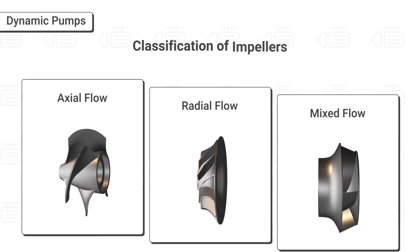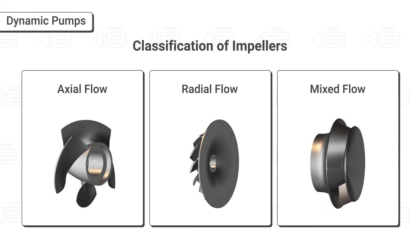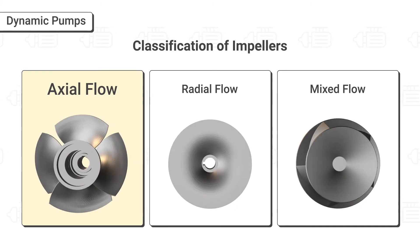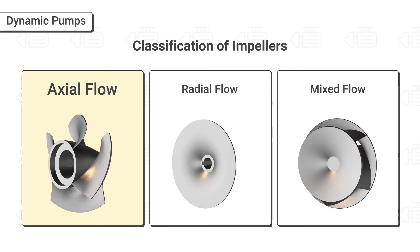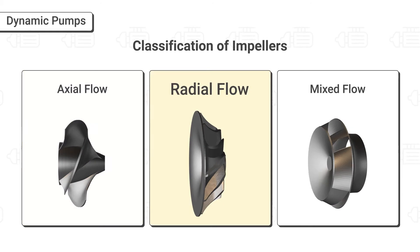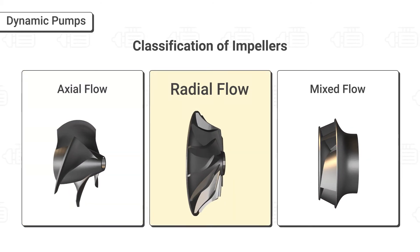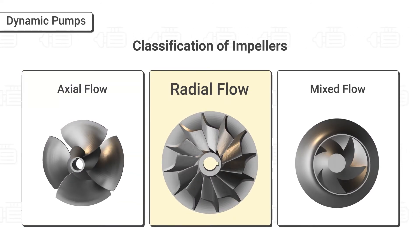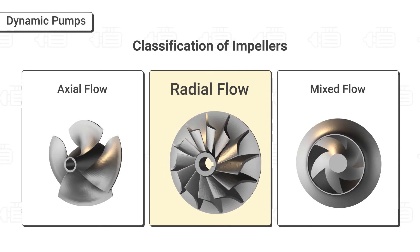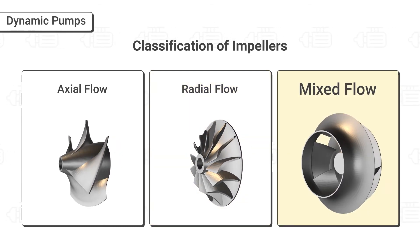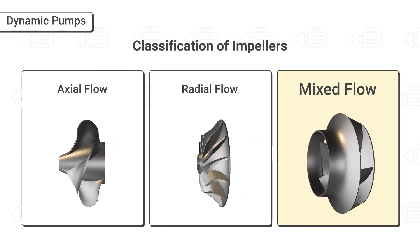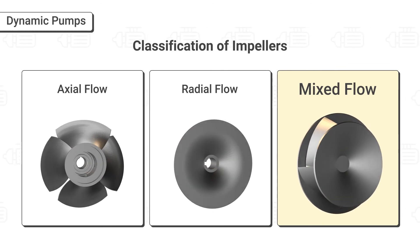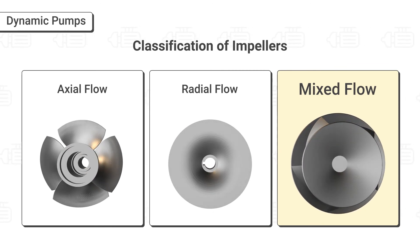We can classify impellers into three designs. Axial flow: the axial flow impeller discharges fluid along the shaft axis. Radial flow: the radial flow impeller discharges the fluid radially at 90 degrees to the shaft axis. Mixed flow: the mixed flow impeller discharges fluid in a conical direction using a combined radial and axial pumping action.